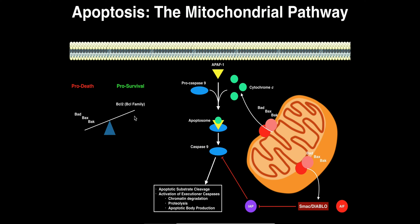We start losing the expression of pro-survival genes upon DNA damage stimuli, and we start expressing pro-death genes such as BAD, BAX, and BAK. These pro-death proteins trigger the release of cytochrome C, AIF, and Diablo into the cytoplasm. Because the entire program for cell death is contained within the mitochondria and doesn't require external stimuli, the mitochondrial pathway is sometimes called the intrinsic pathway of apoptosis.